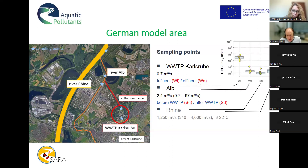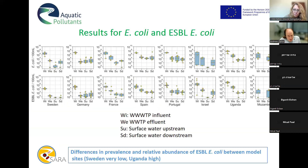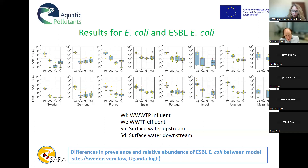For the German example, we sampled the influent and effluent of the treatment plant, then the receiving river Alp upstream, and the larger Rhine River downstream. Results are shown for the wastewater treatment plant influent and effluent, surface water upstream and downstream, across all sampling areas from left to right — north to south — starting with Sweden through to Mozambique. There are of course differences in prevalence and relative abundance.